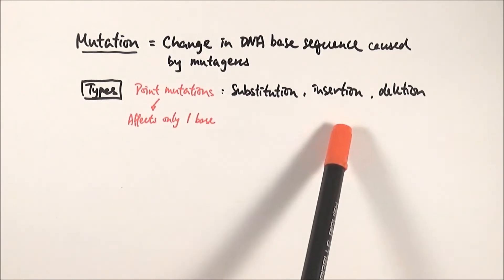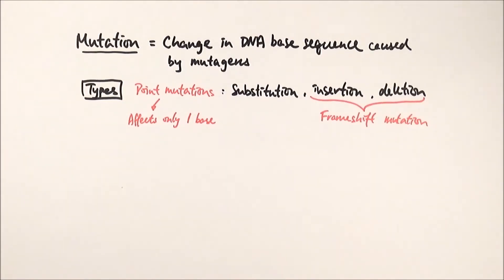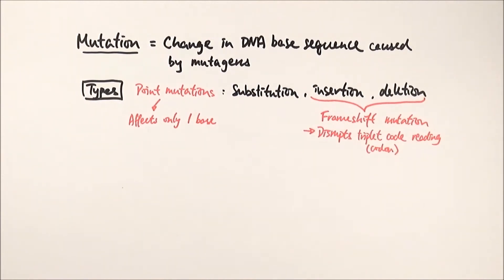We say that for insertion and deletion, it actually causes what we call frameshift mutation. What that means is that because of insertion or deletion of a base, it will disrupt the triplet code reading, which is basically the reading of the codon.